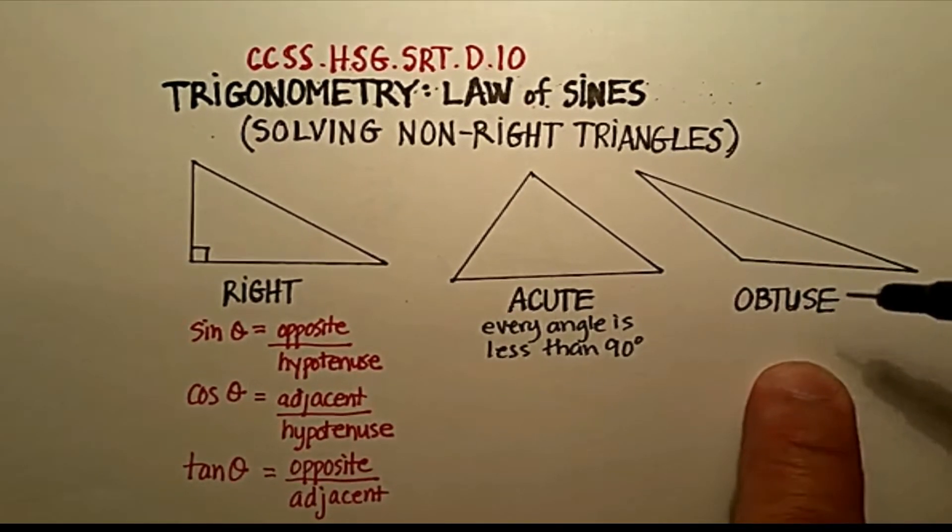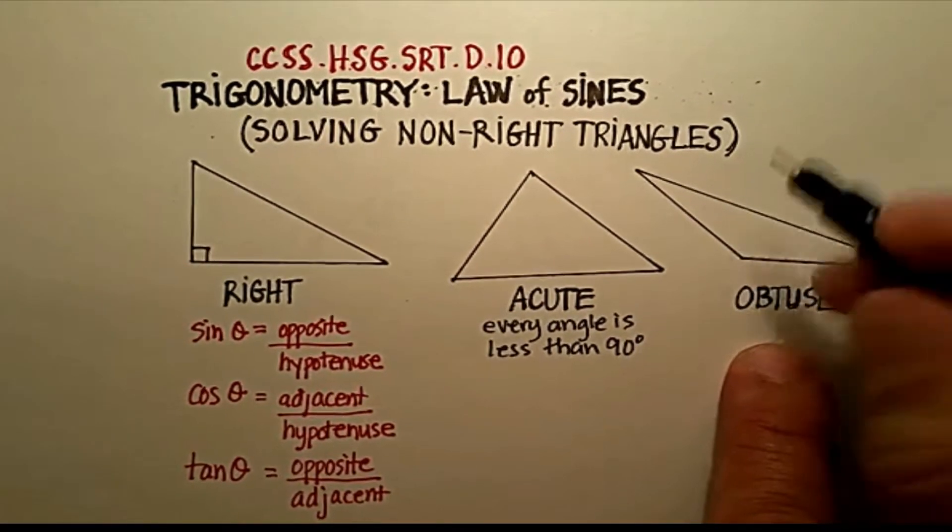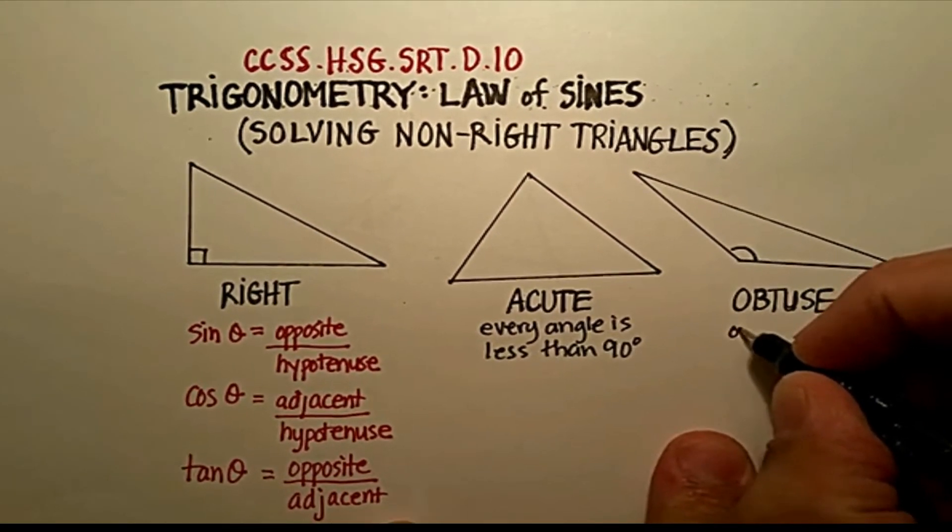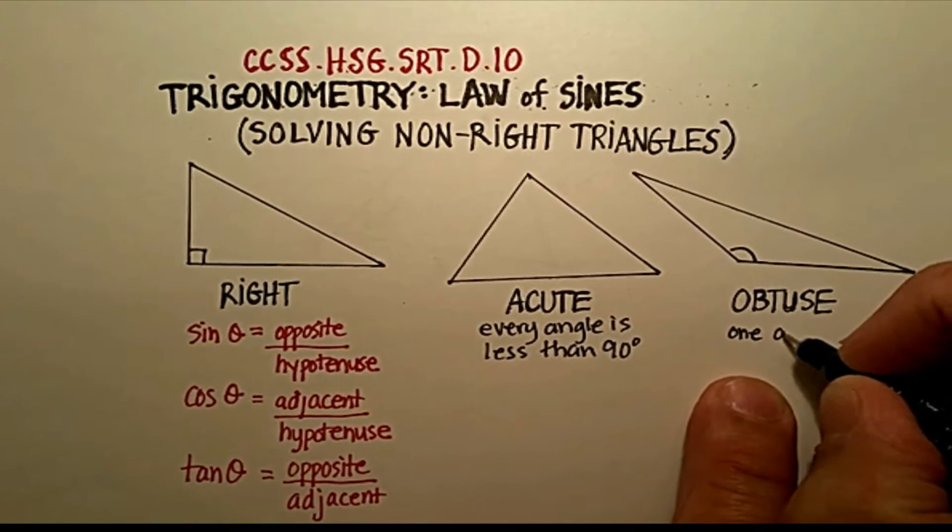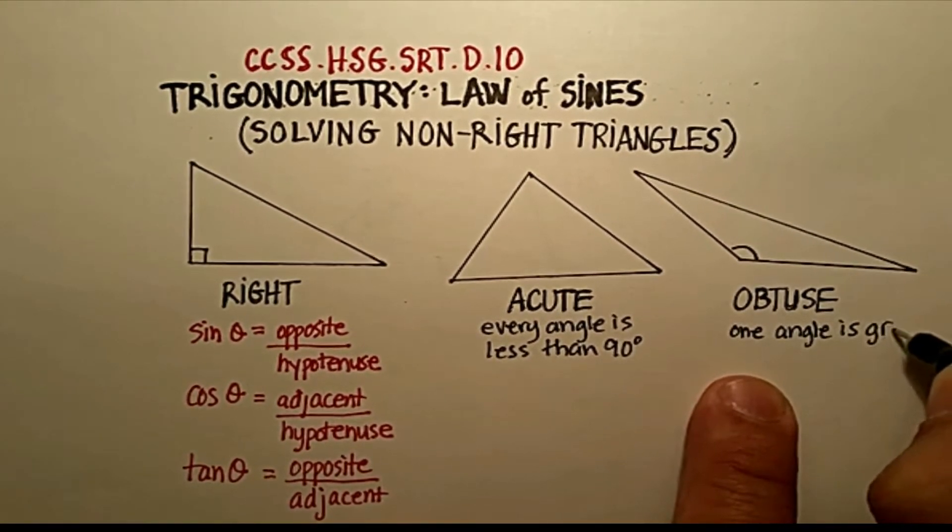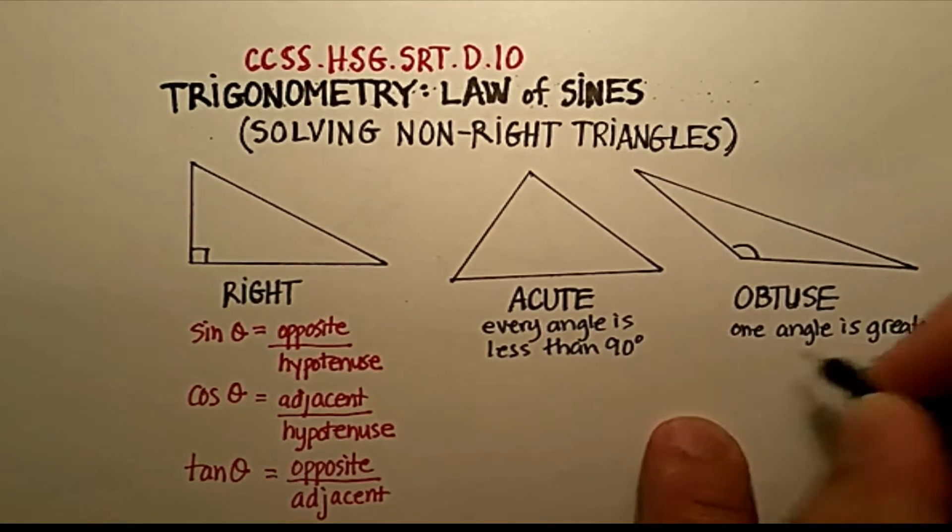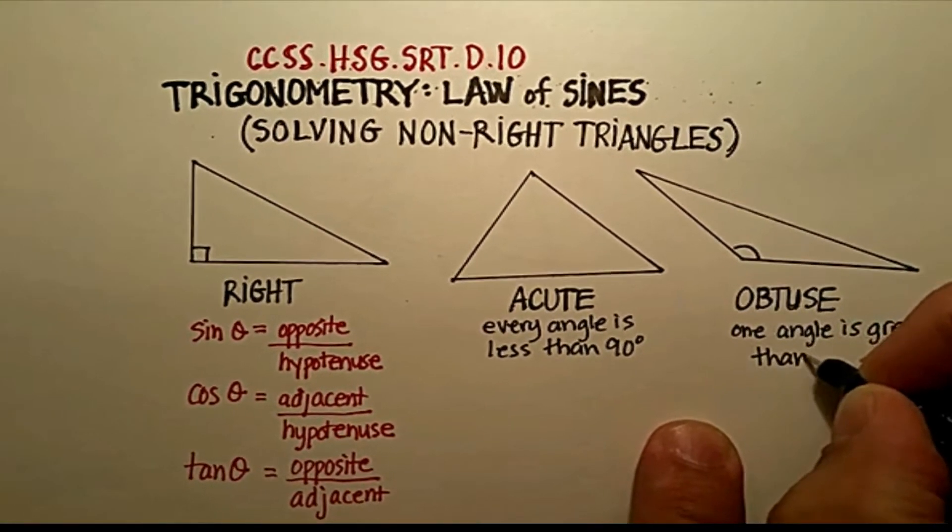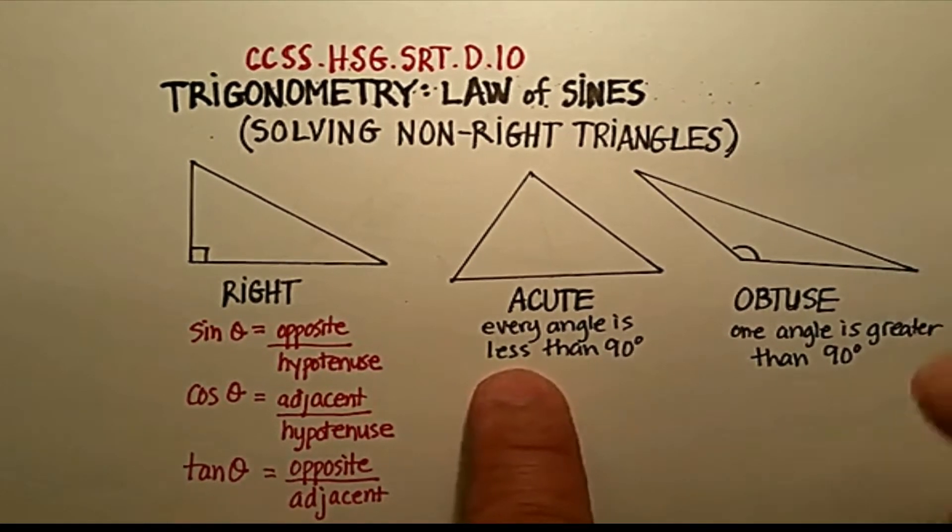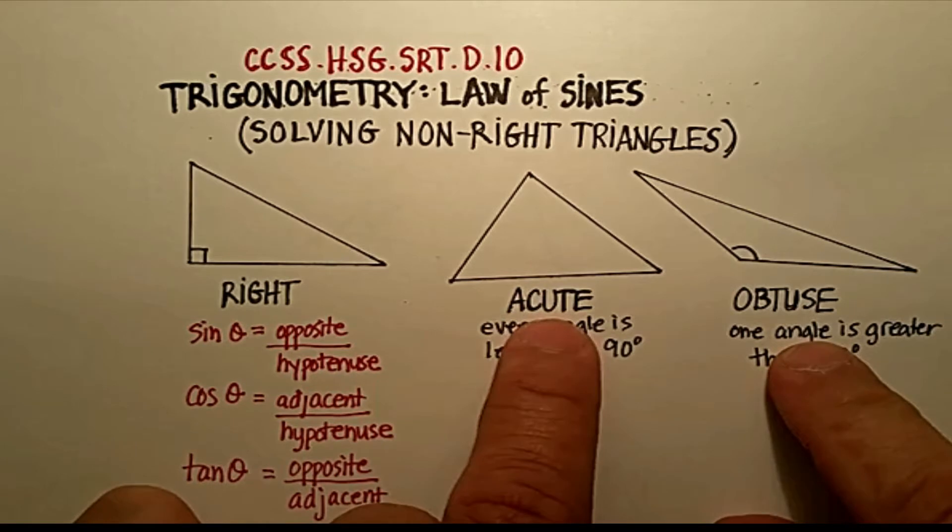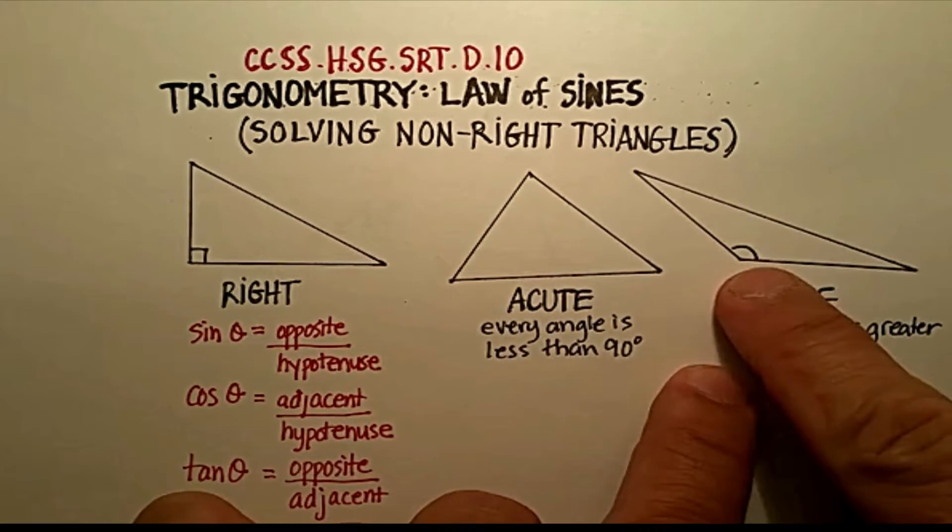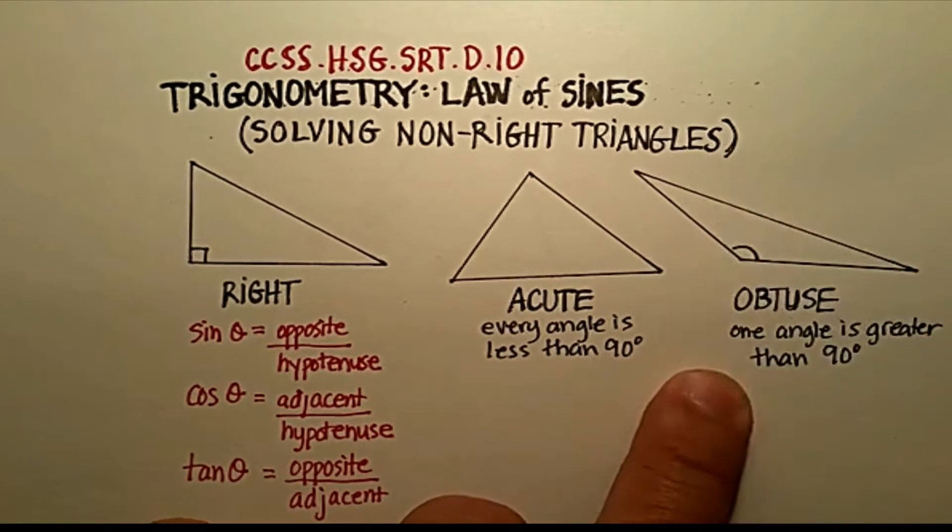And then you have an obtuse triangle where one of the angles, in this case, this one right here, where one angle is greater than 90 degrees. Which again means that the other two angles have to be acute. So remember, the difference between the two: in an acute triangle, every angle is less than 90, and in an obtuse angle, one of them is greater than 90, the other two are even smaller acute angles.